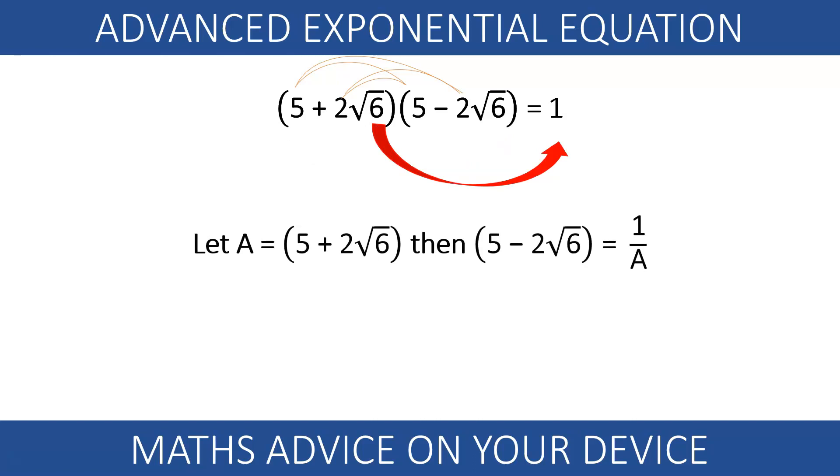Let's call 5 plus 2 root 6 a, then 5 minus 2 root 6 is 1 over a. We rewrite our original equation.